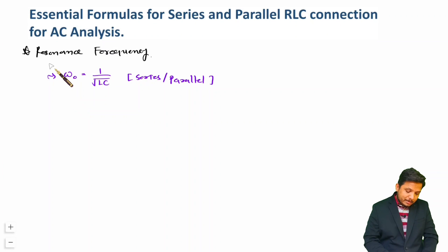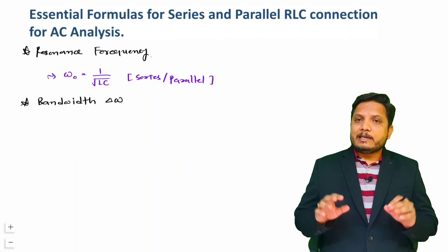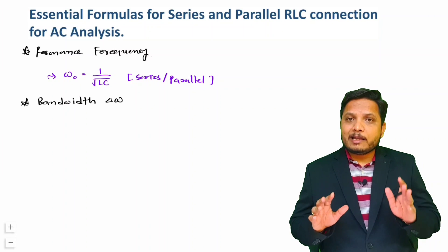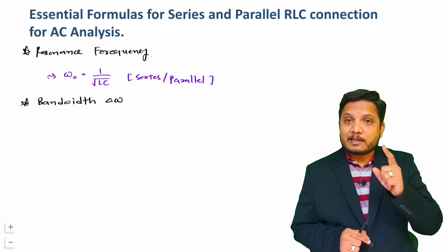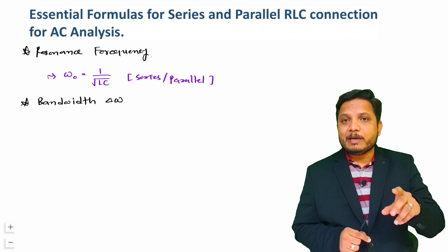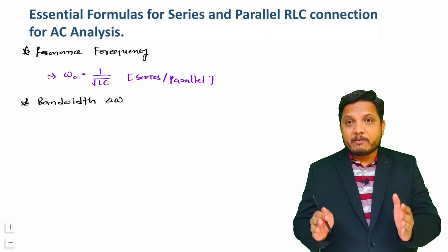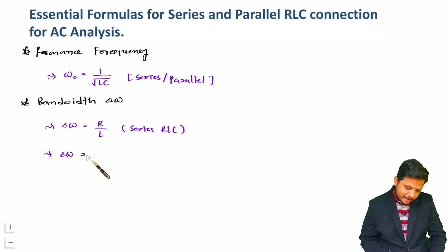Now let us discuss bandwidth. For bandwidth calculation, it is simply R by L for a series RLC connection and 1 by RC for a parallel RLC connection — these are the formulas you need to remember. So, delta omega equals R by L for series RLC and delta omega equals 1 by RC for parallel RLC. There are some other important meanings associated with these frequencies that I will explain step by step.